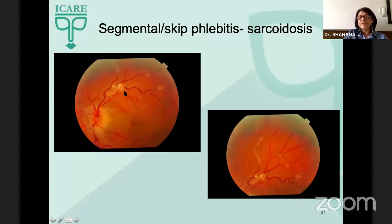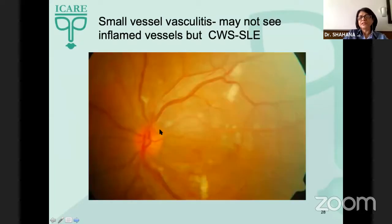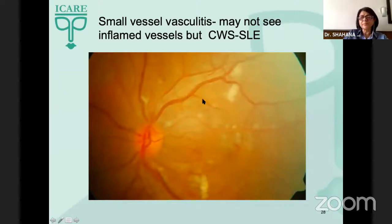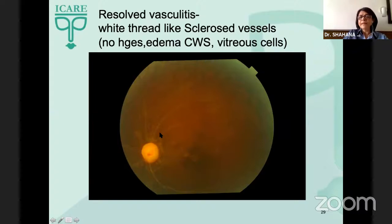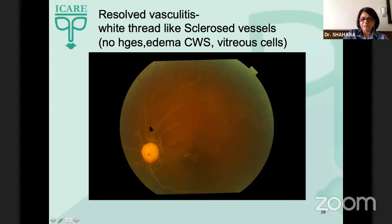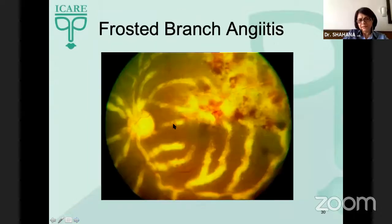If you see skip lesions of phlebitis, think of sarcoidosis — it's very characteristic of that disease. When small vessels are inflamed, we may not see the inflamed vessels directly, but the presence of numerous cotton wool spots should alert us to that possibility, as seen in a patient of SLE. When vasculitis resolves, the inflamed vessels are left as white thread-like sclerosed vessels with no associated hemorrhages, edema, or vitreous cells.